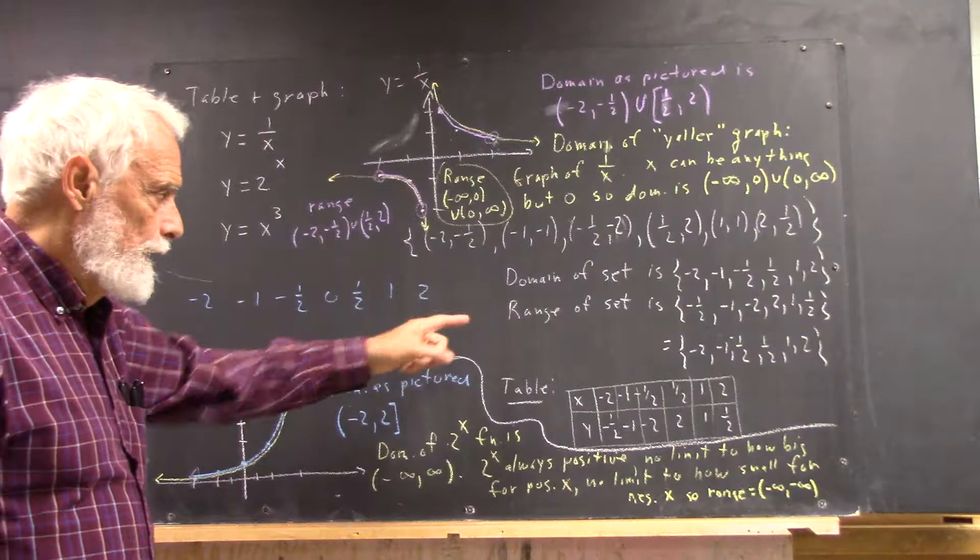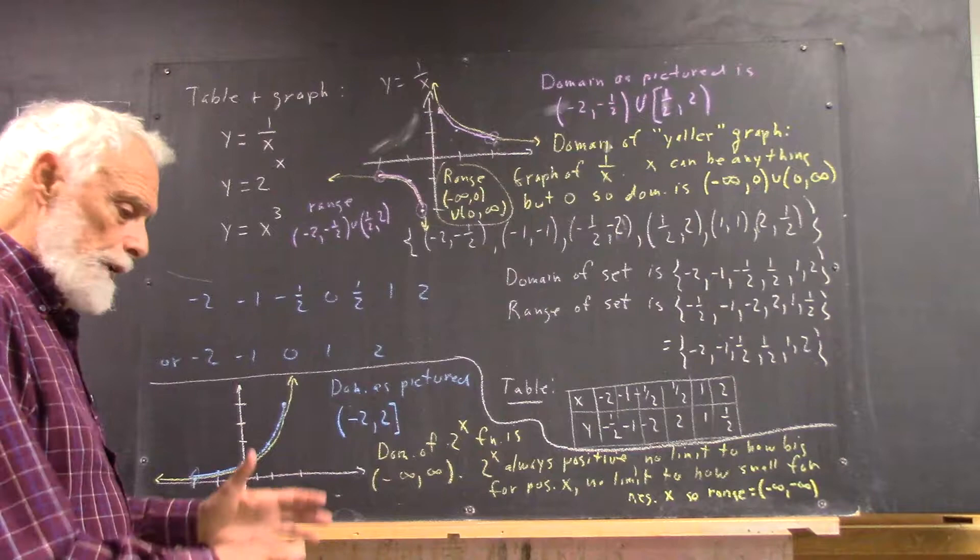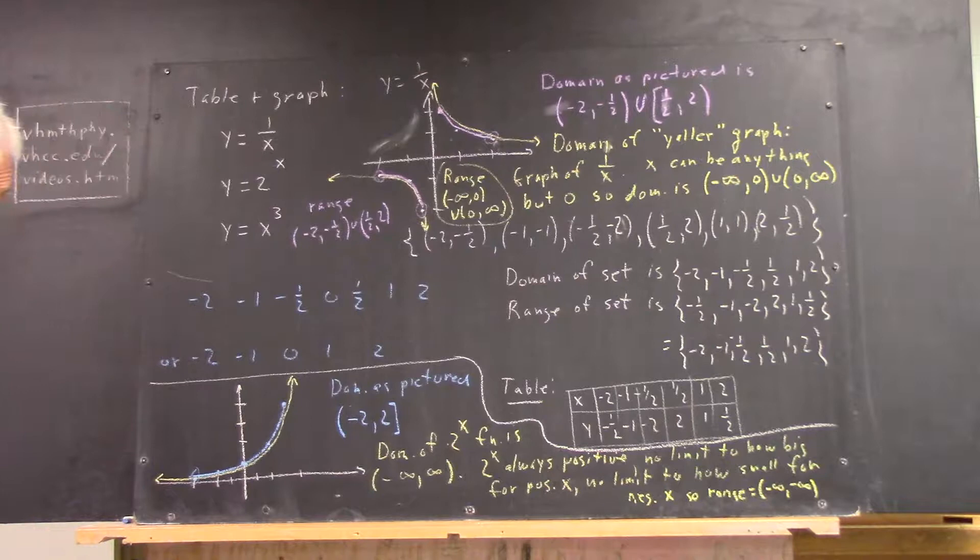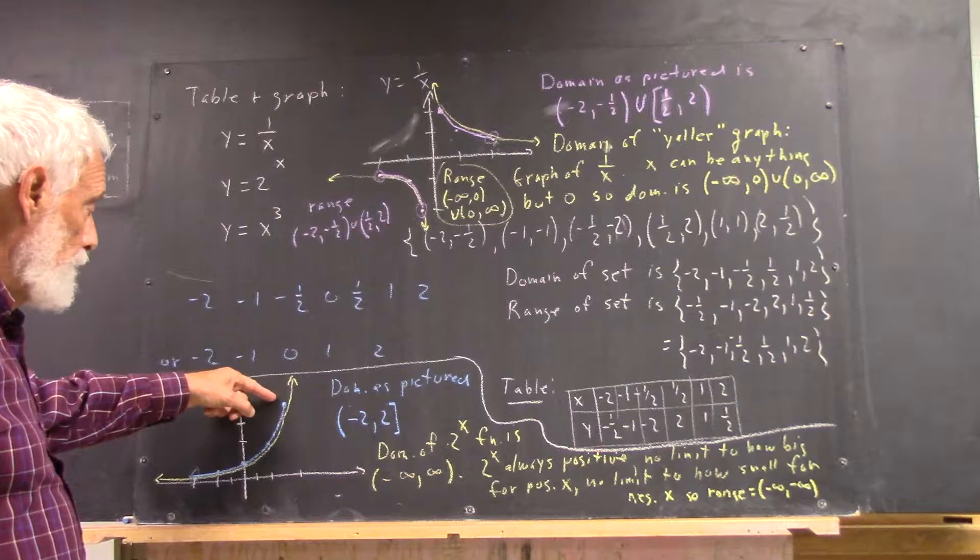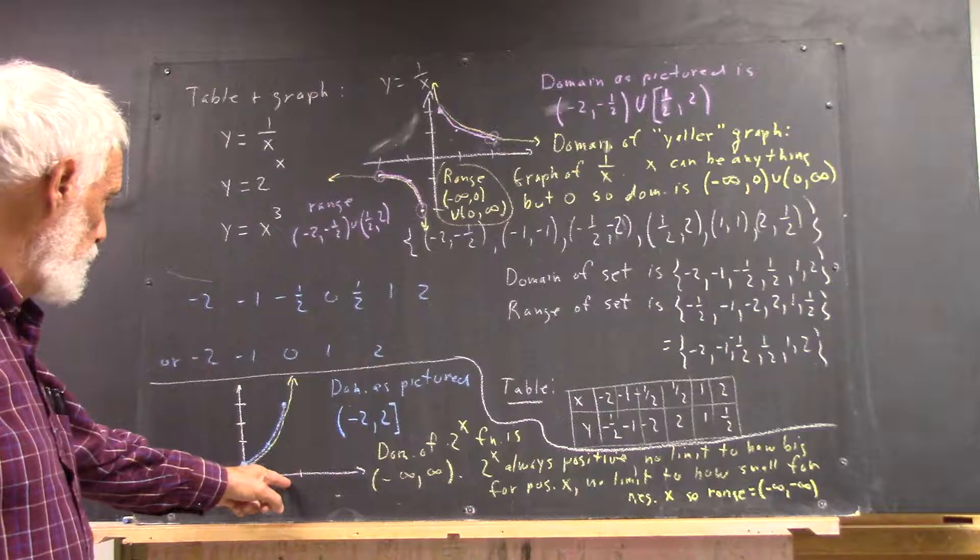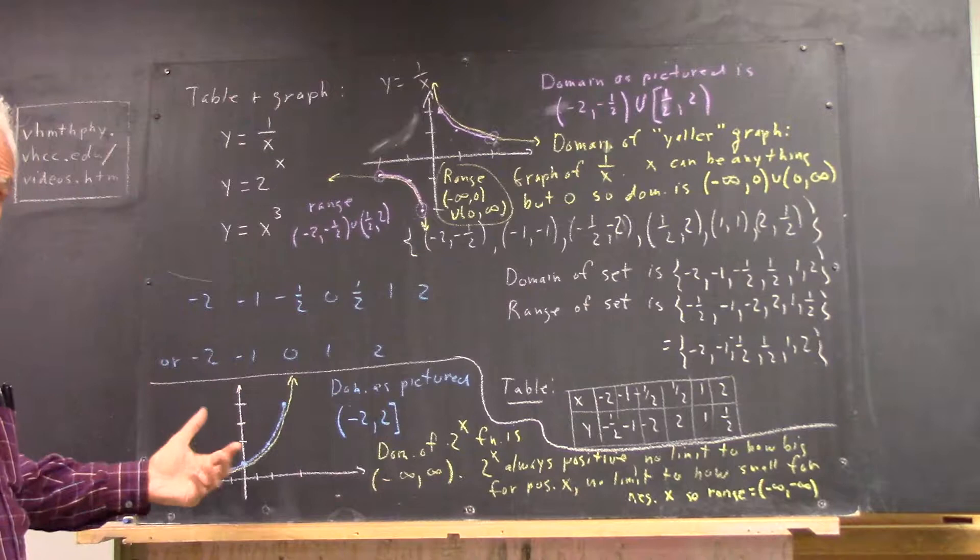And I didn't write the domain of the set or the range of the set, but you should be able to do that very easily. Just write down the set of points and write down the set of the first coordinates and write down the set of the second coordinates. The domain of the blue graph as pictured is what? Well, you have x values that go from negative 2 to 2. I don't think I made it all the way up to 2 at this point, but you understand what that would be.